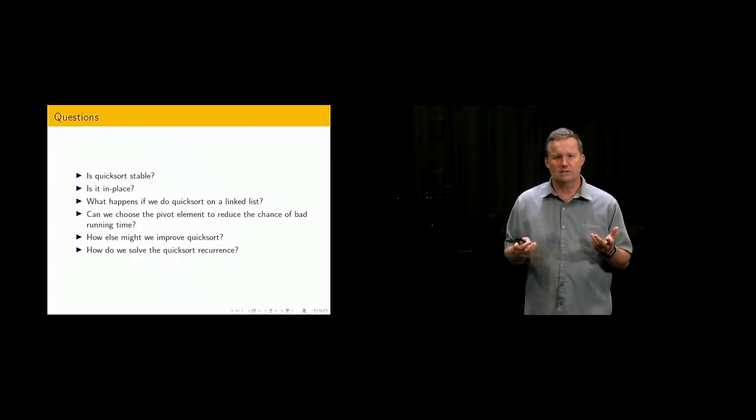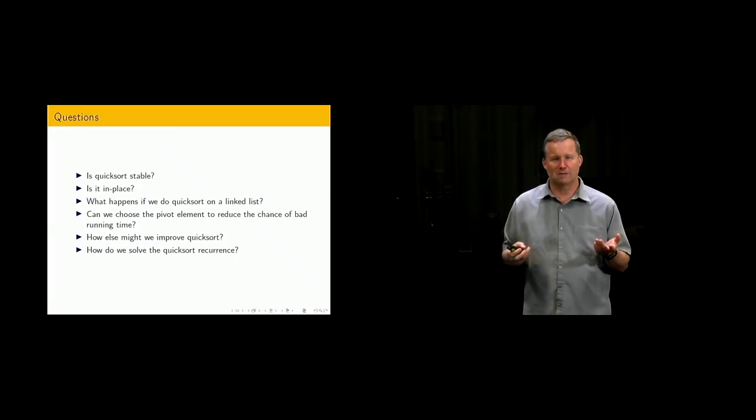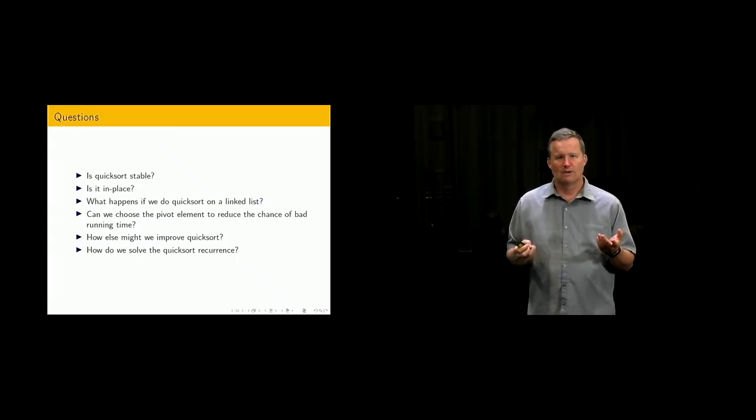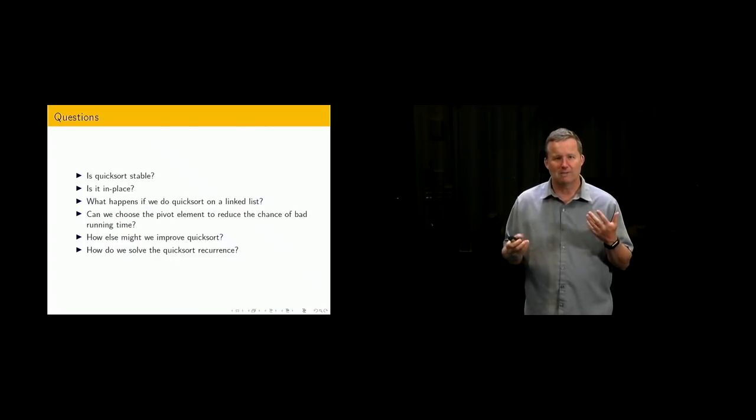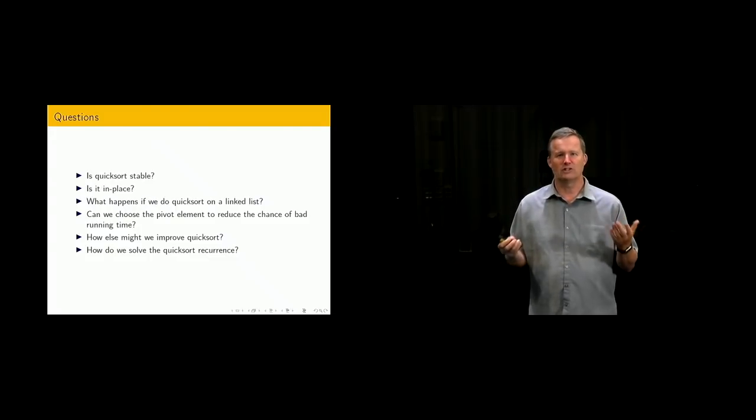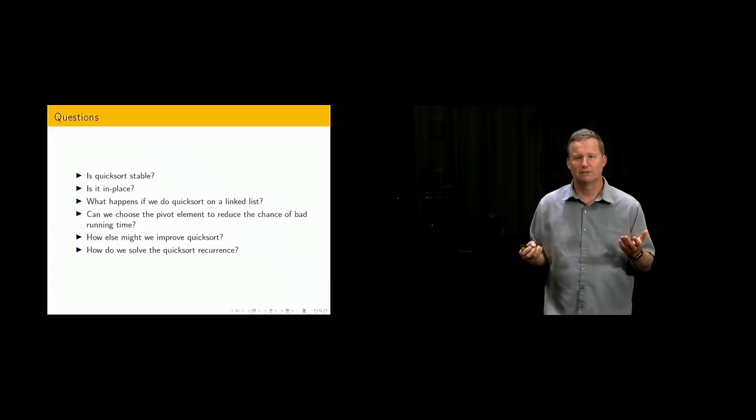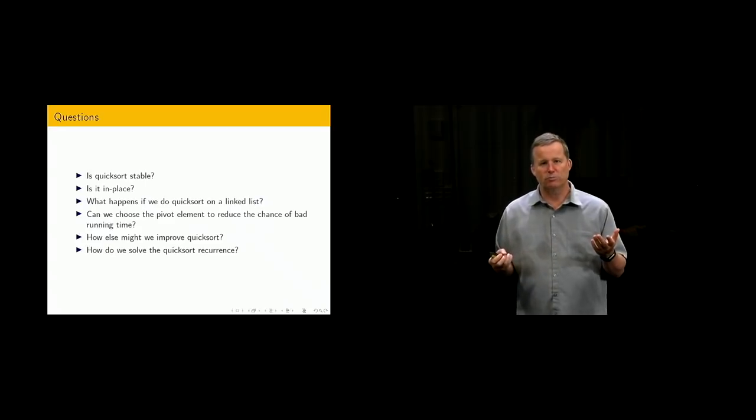Quicksort has this important choice that's made at the beginning of what's the pivot element. In terms of correctness it doesn't matter but it can influence the running time. You can see that we've got really bad behavior if we have a sorted array and we always take the first element to be the pivot element.